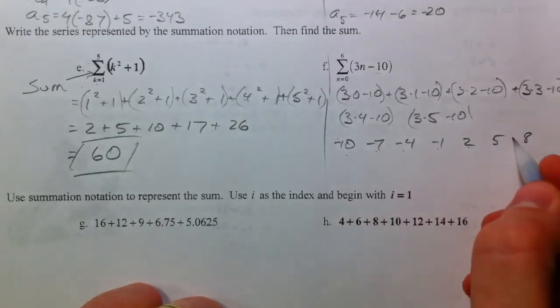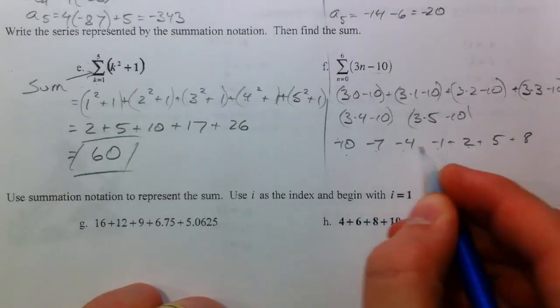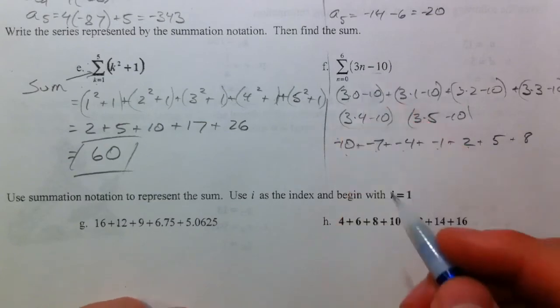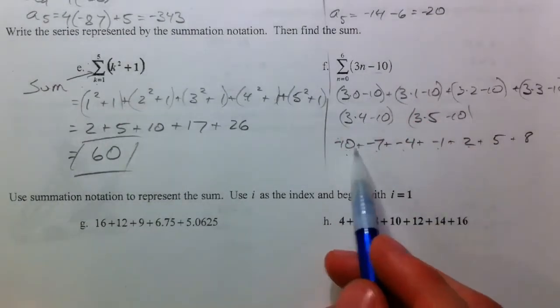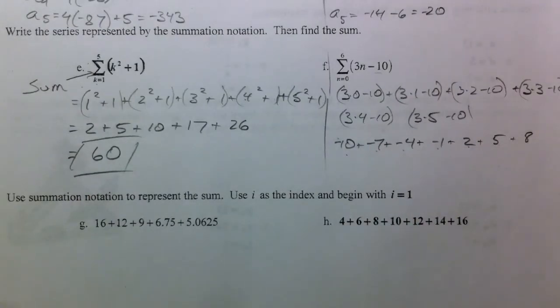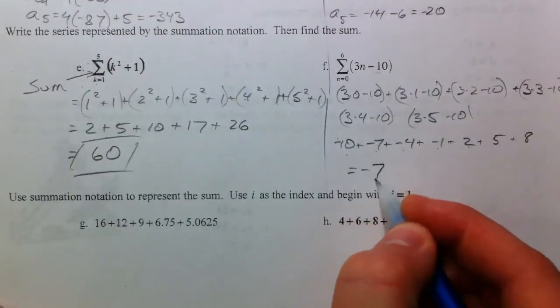So, I knew that we were adding 3 every single time because our common difference was 3. Starting at negative 10 because of the 0. So, 0, 1, 2, 3, 4, 5, 6. And when we add those up, we get negative 7.